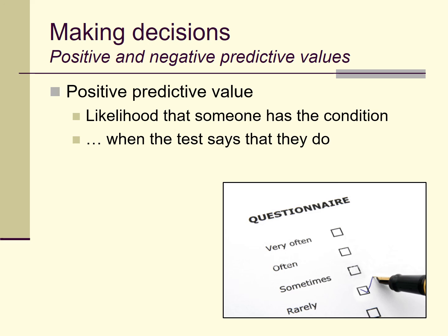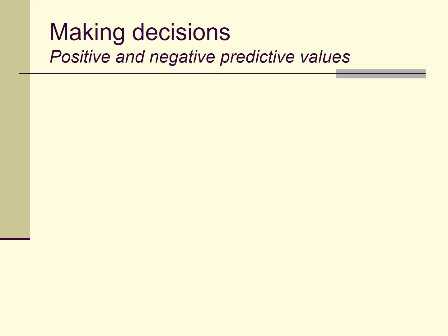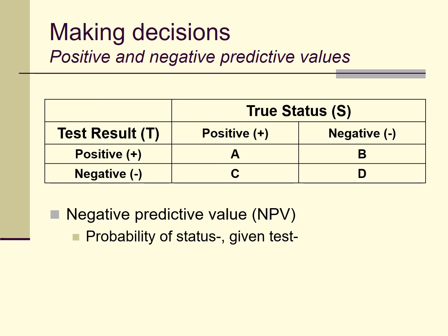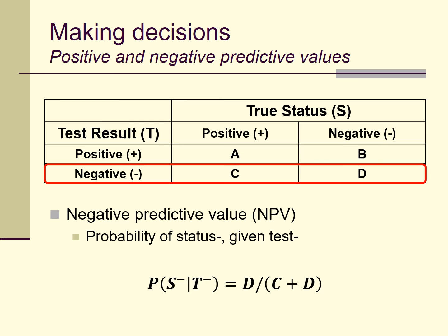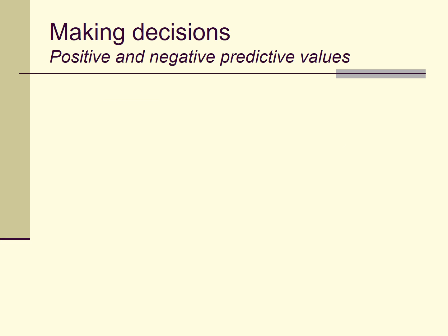A PPV of 0.9 would make you more comfortable using the test in clinical settings than a PPV of 0.2. Similarly, we can calculate negative predictive value (NPV) — the probability of status negative given test negative. Looking at the row of all people with negative test results, how many are actually status negative? That's D divided by (C + D). NPV is the likelihood that someone does not have the condition when the test says they do not.